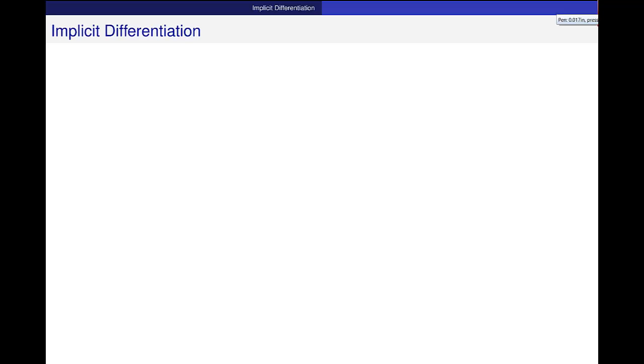Okay, I want to do just a couple more examples from implicit differentiation so you can see how all of the stuff that we have done in chapter two kind of comes into play.